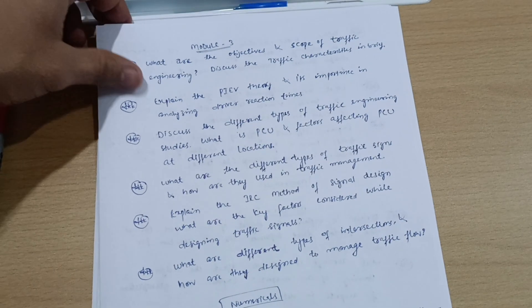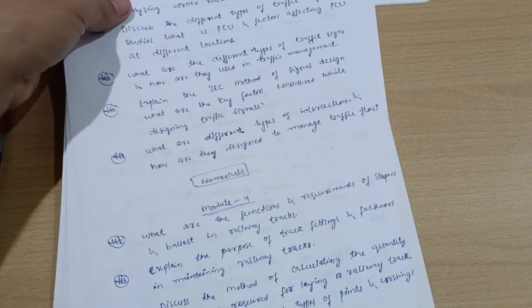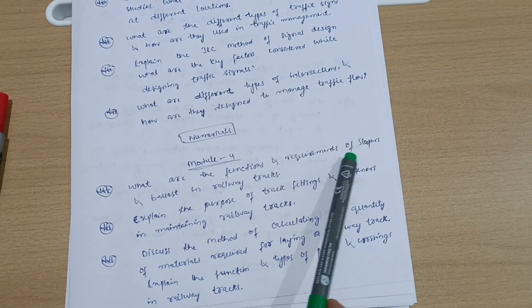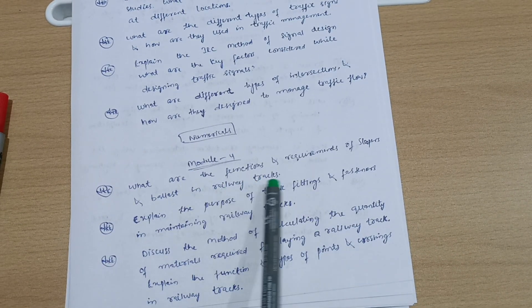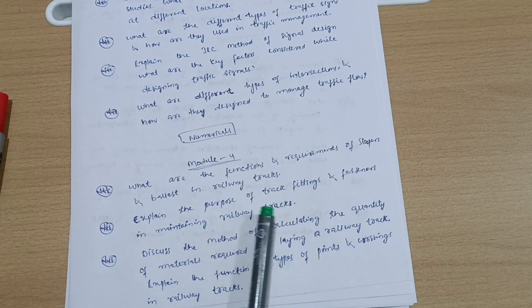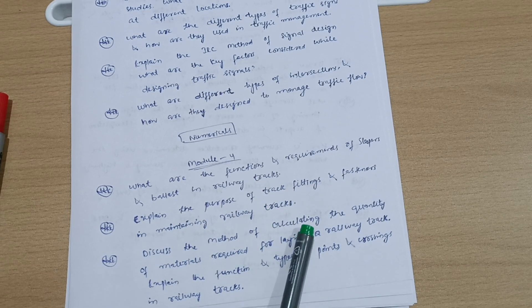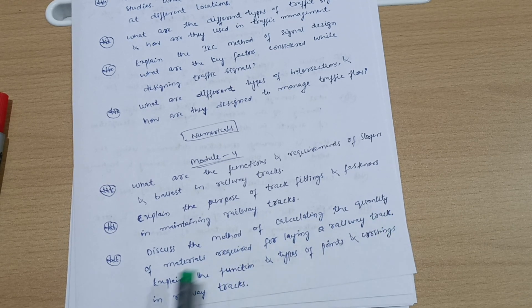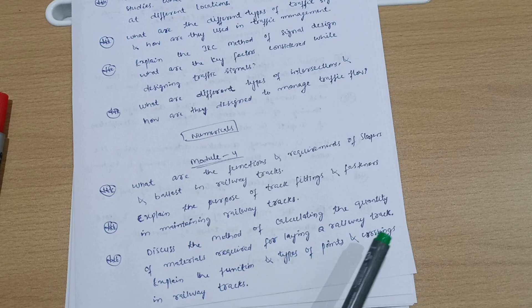Module four. What are the functions and requirements of sleepers and ballast in railway tracks? Explain the purpose of track fittings and fasteners in maintaining railway tracks. Discuss the method of calculating the quantity of materials required for laying a railway track. Explain the function and types of points and crossings in railway tracks.